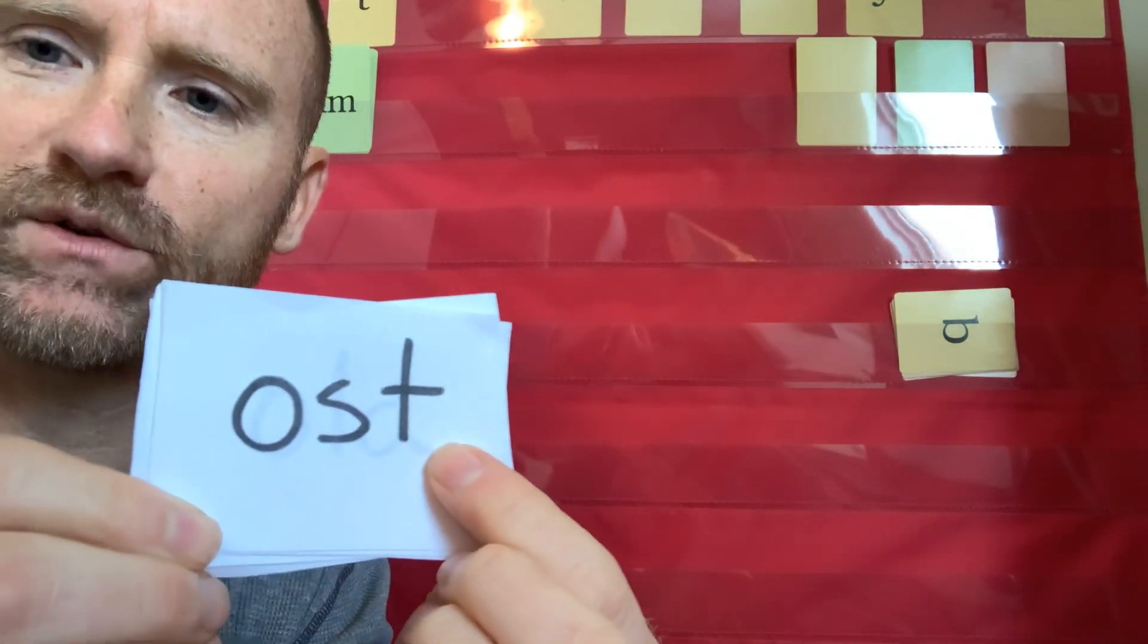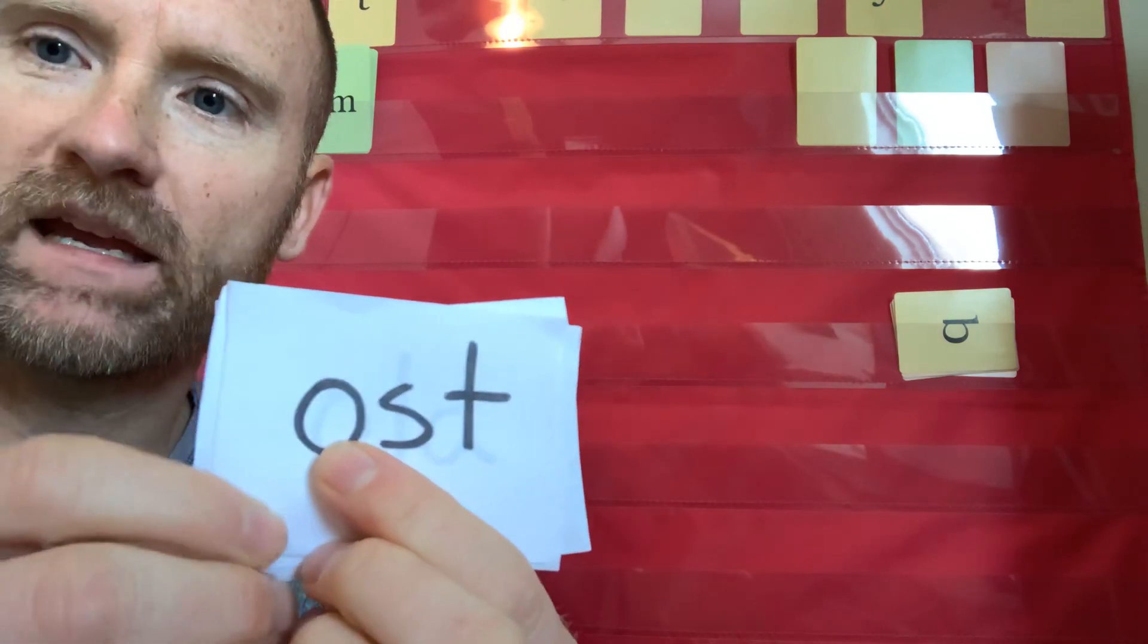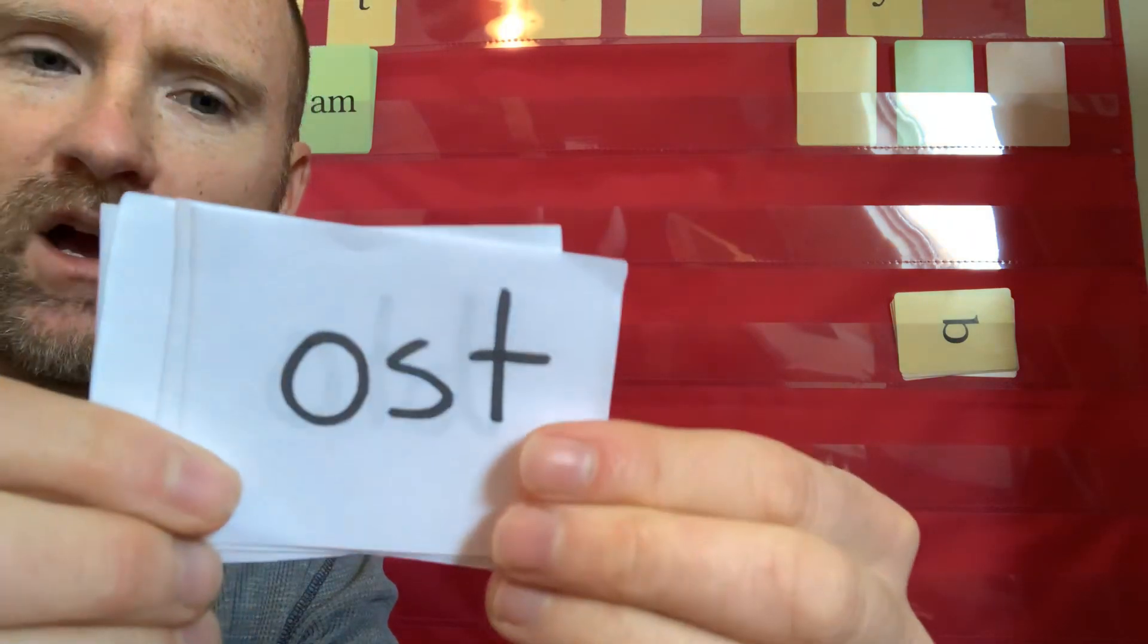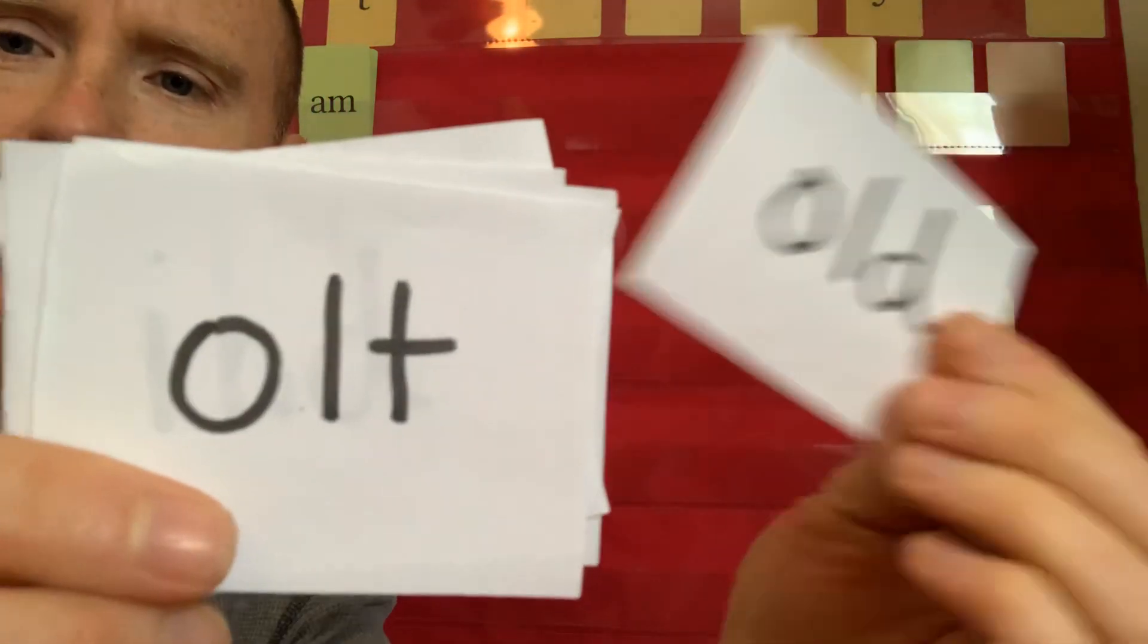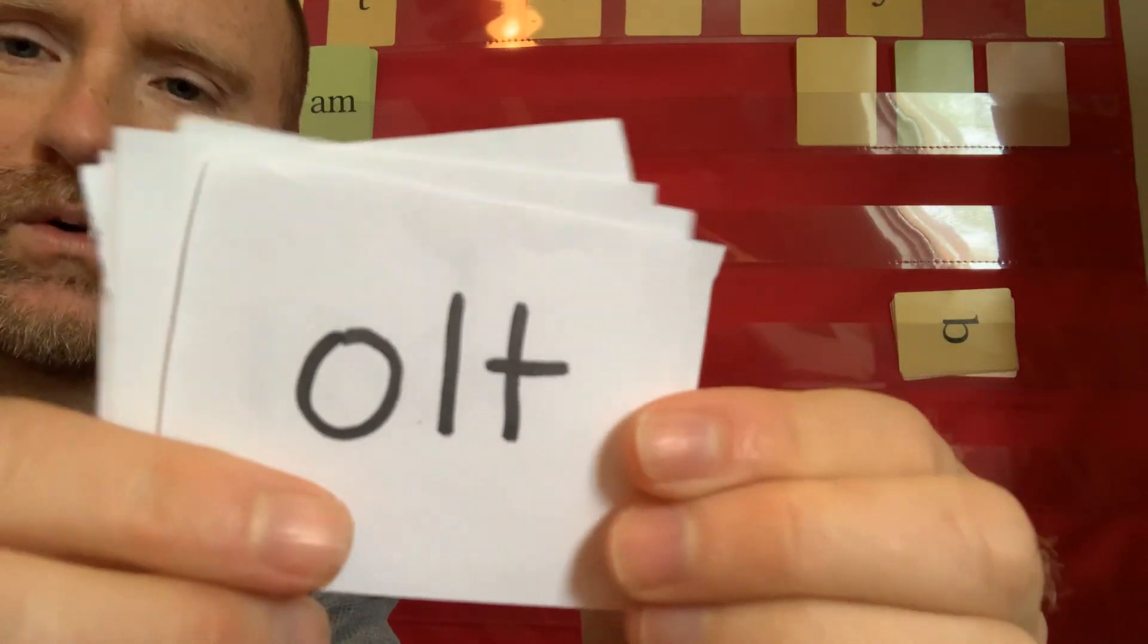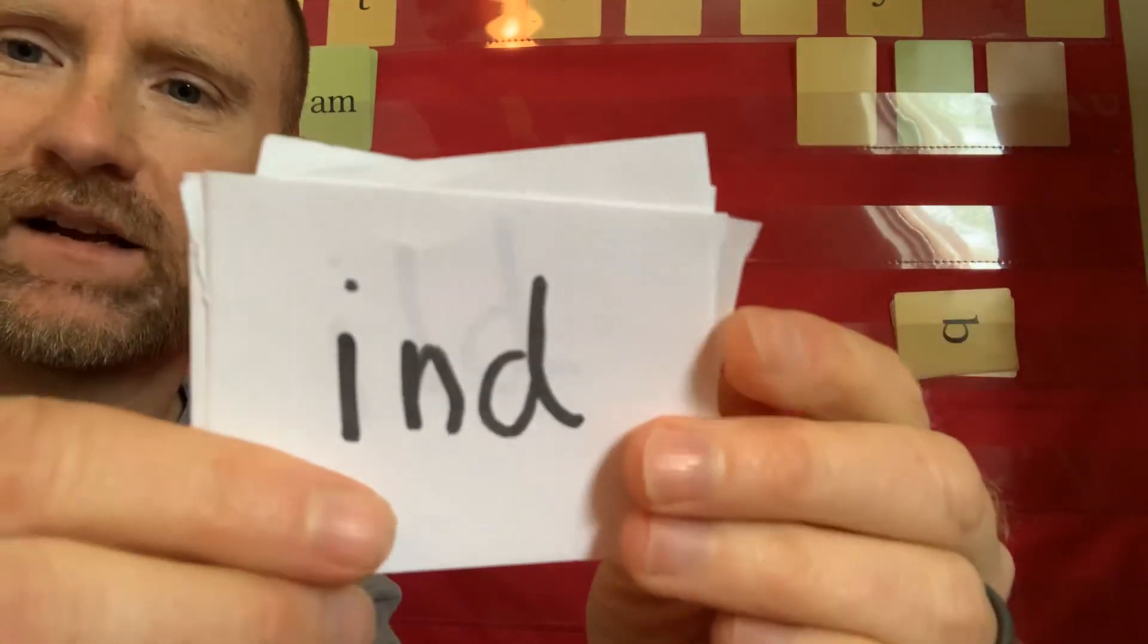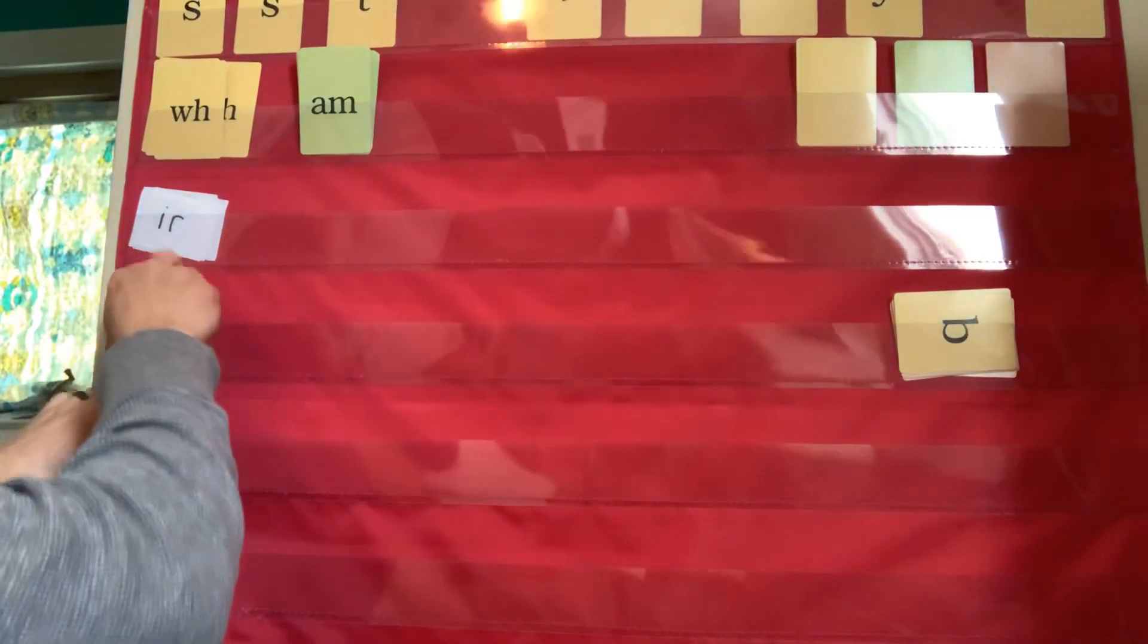Closed syllable exceptions. Remember, these look like closed syllables. The exception is these vowels make a long vowel sound. They say their name. Ready? O-S-T. O-L-T. O-L-T. I-N-D. I-L-D. O-S-T. Good.